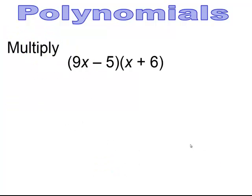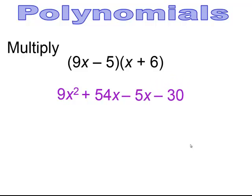Pause and try. Multiplying: 9x × x = 9x², then 9x × 6 = +54x, then −5 × x = −5x, and −5 × 6 = −30. Combining the middle like terms: 54x − 5x = 49x. Final answer: 9x² + 49x − 30.